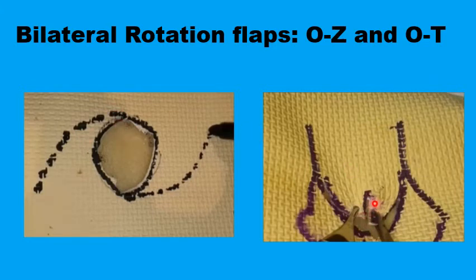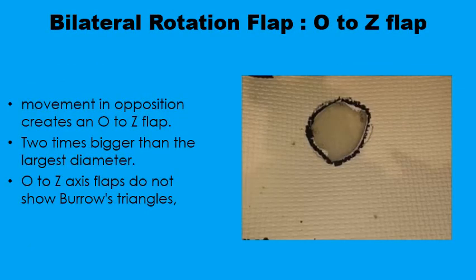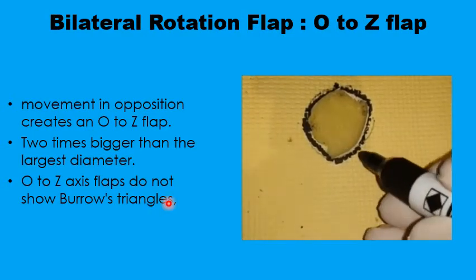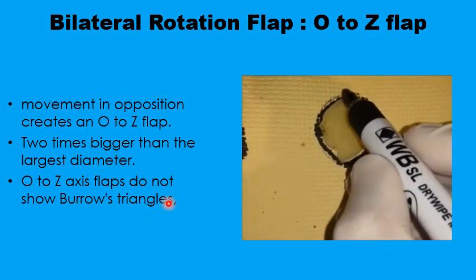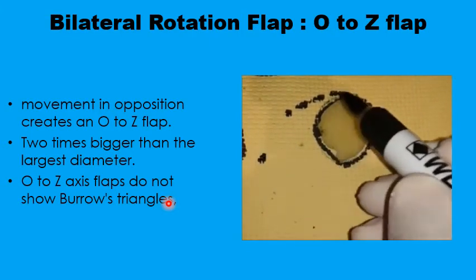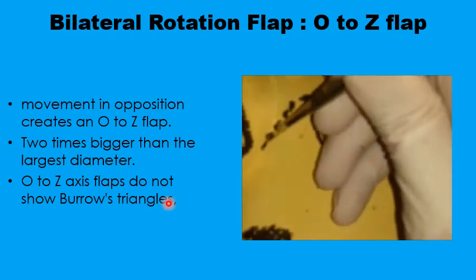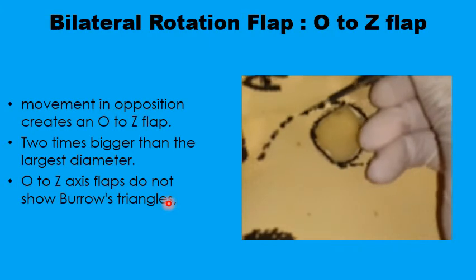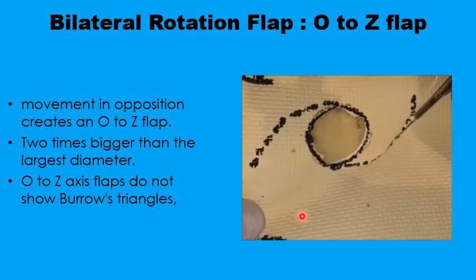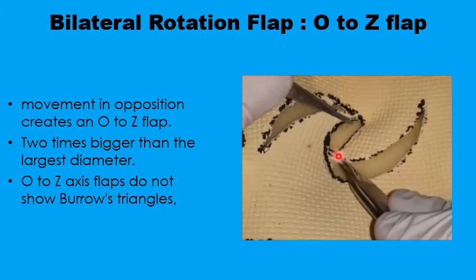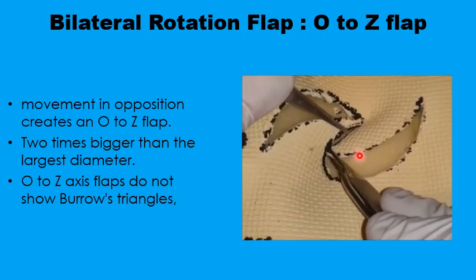Alternatively, a circular or triangular defect can be transformed into a T using bilateral rotation flaps. For the O-to-Z configuration, the two flaps are drawn in opposite directions on both sides. Because two flaps are used rather than one, each curvilinear line need only extend about 2.5 to 3 times the diameter of the defect. Once the flaps are elevated and mobilized to meet in the midline, the result is a Z rather than an O.